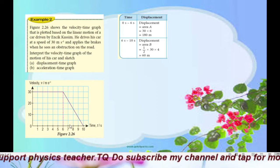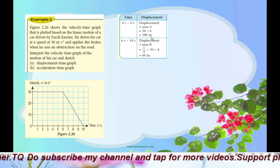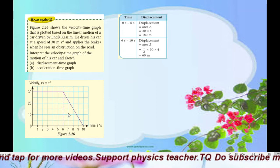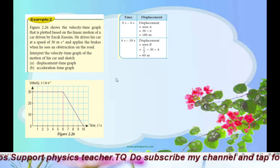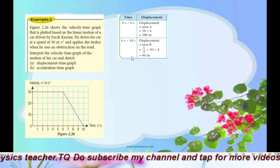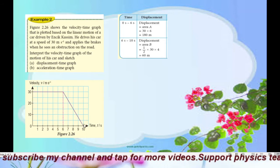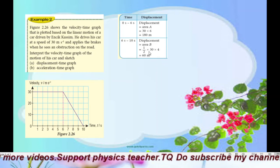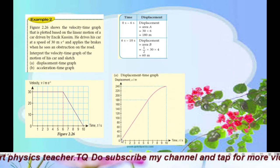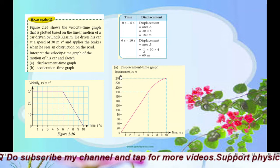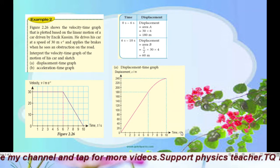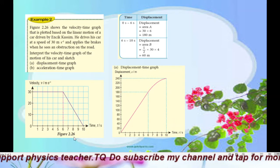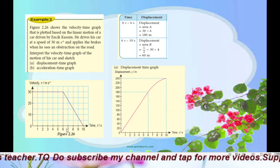Now sketch the displacement-time graph. Copy the time axis from the velocity-time graph — the time intervals must be the same. From 0 to 6 seconds, motion is uniform velocity, so the graph is a straight line with positive gradient, ending at 180 meters at 6 seconds.